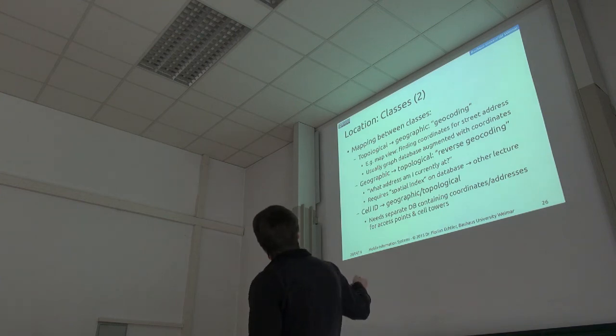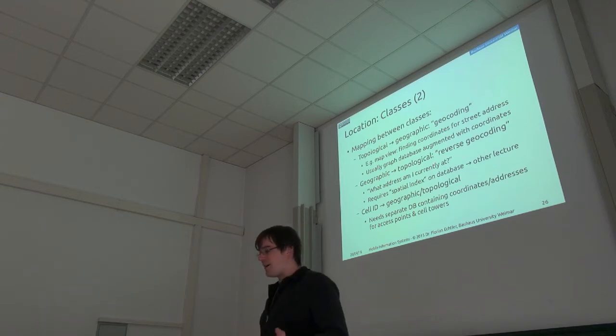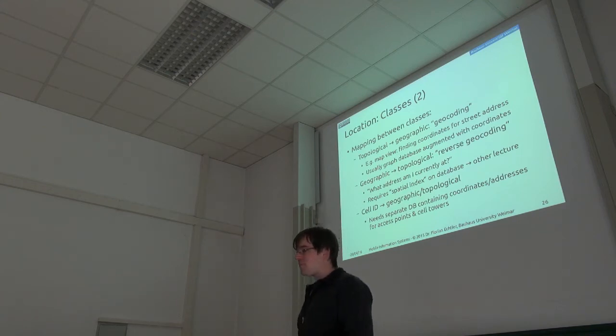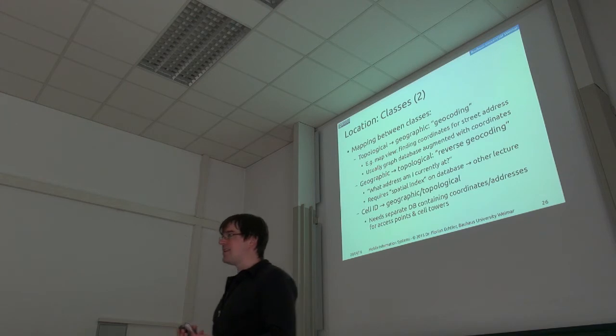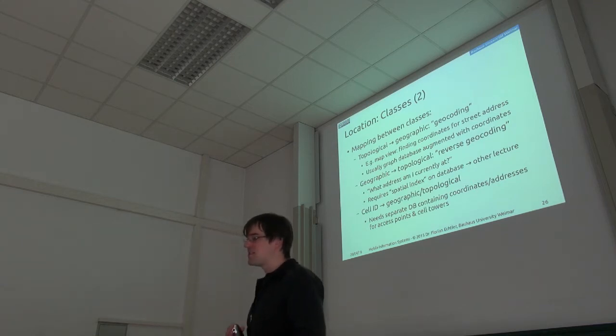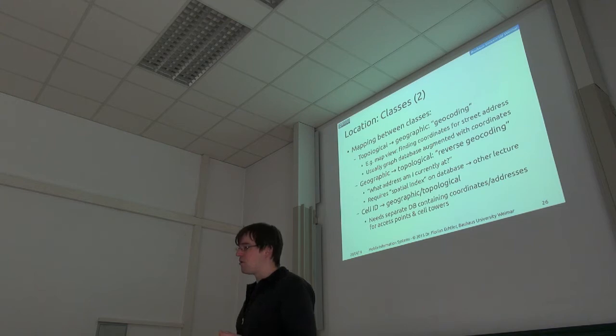The other way around is so-called reverse geocoding. So I know where I am in terms of geography. For example, I have GPS which gives me coordinates, and I want to know the address. For that to work, you need a so-called spatial index on the database, which helps you pinpoint the right node for specific coordinates without having to search through the whole database at once. And this will be covered in another lecture, but you can have basically both approaches.